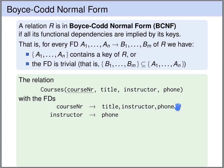We have two functional dependencies. The course number uniquely determines the title, the instructor, and the phone. And we have a functional dependency that the instructor uniquely determines the phone number. Now is this table in Boyce-Codd normal form? The first functional dependency — the left-hand side — contains a key. The course number is a key of this relation. If we would not know that, how would we determine this? We would take the left-hand side and compute the closure.